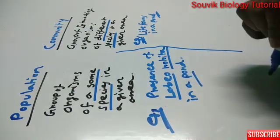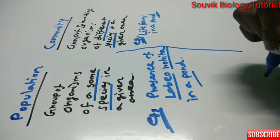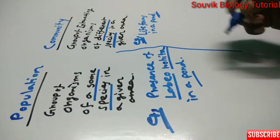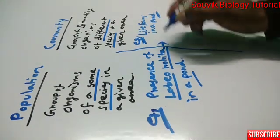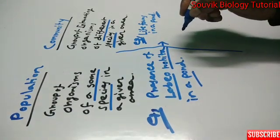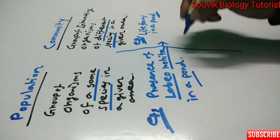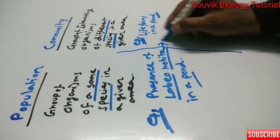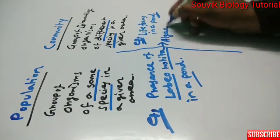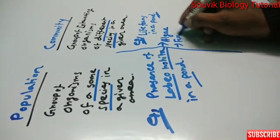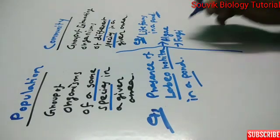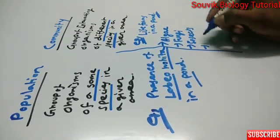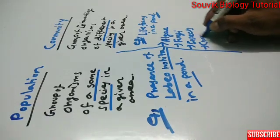An example of community is all life forms in a pond. The difference is: population refers to the presence of only one particular species in a particular area, whereas community includes all kinds of species present in a pond and interacting with each other. These life forms include various kinds of algae, fungi, insects, and crustaceans.